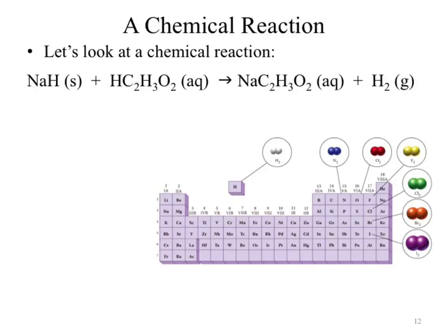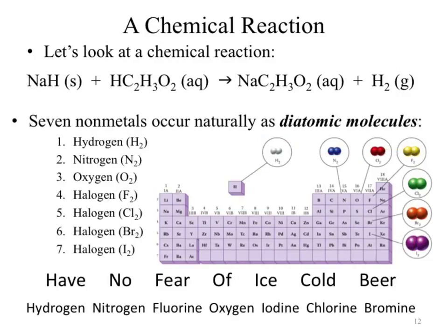How can you remember the diatomic elements? One student suggested an upside-down L shape on the periodic table. A tutor used the analogy of a gun with hydrogen as the bullet. I tend to think of it as a seven — six elements outlined in the seven shape, plus hydrogen makes seven. Another mnemonic that sticks: 'have no fear of ice-cold beer' — Hydrogen, Nitrogen, Fluorine, Oxygen, Iodine, Chlorine, Bromine. As long as you're aware that you need those, you're good to go.